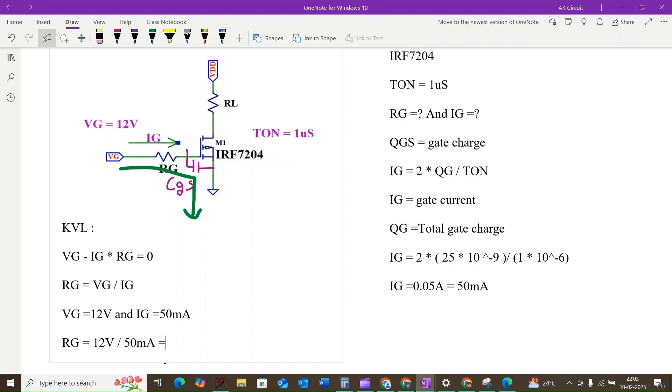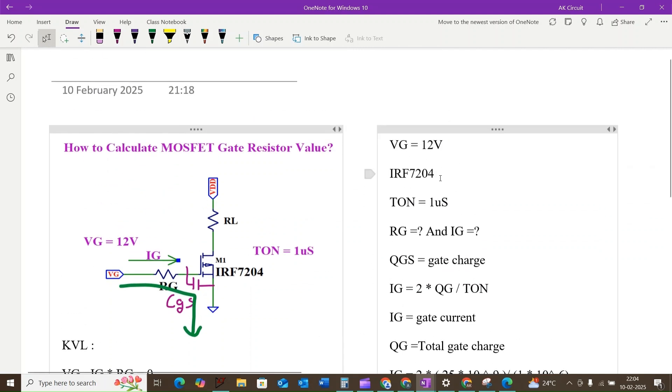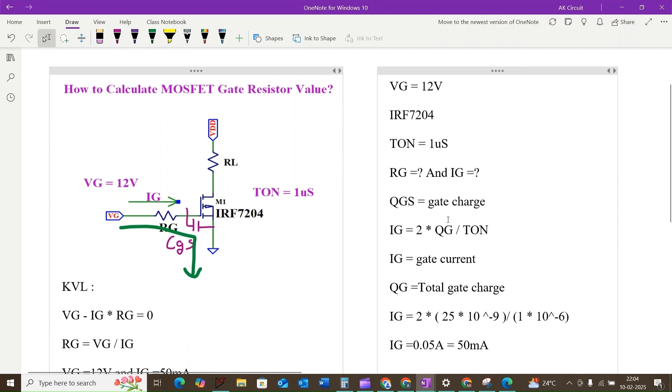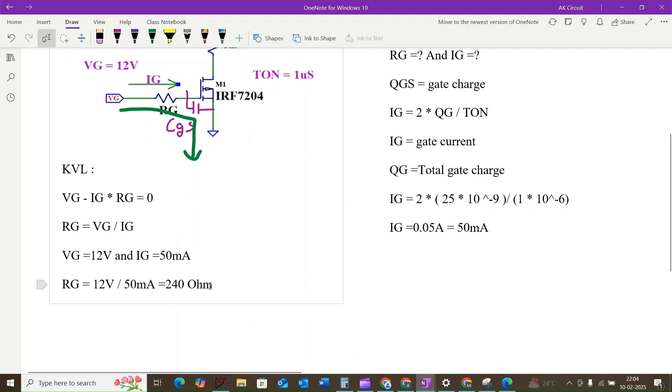Which is equal to 240 ohms. Therefore, based on the given parameters and the MOSFET datasheet, the calculated gate resistance RG is equal to 240 ohms and the gate current IG will be 50 milliamps.